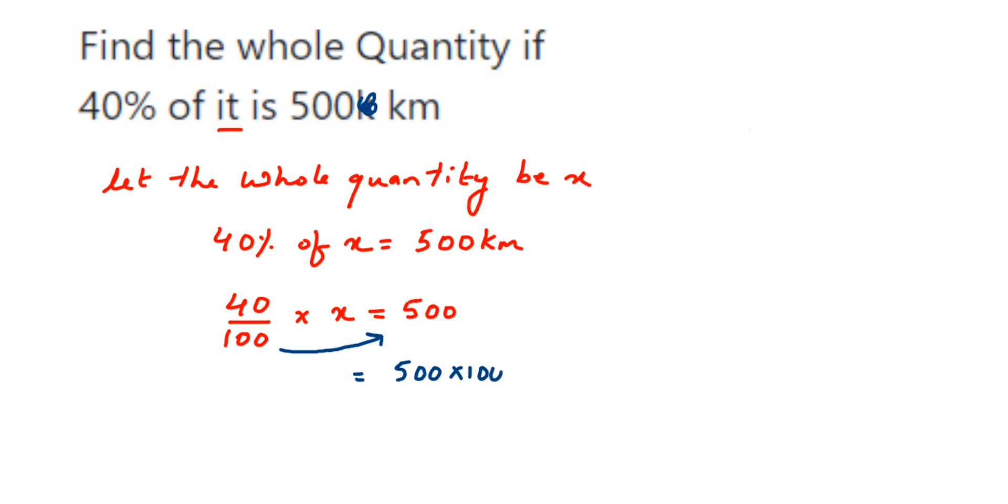Right, it's 40 into x. So when you transpose 40 to the other side, it comes in division. So x is equal to 500 multiplied by 100 divided by 40. I have cross multiplied here.